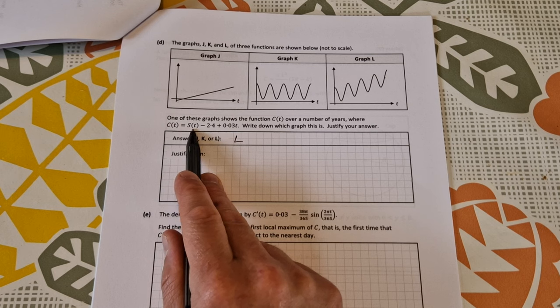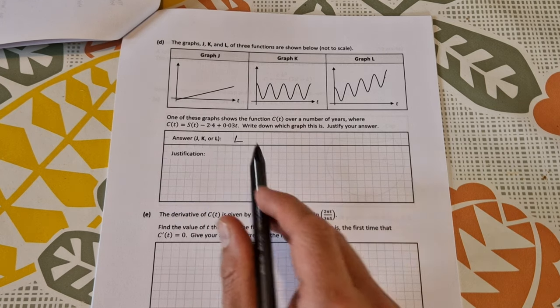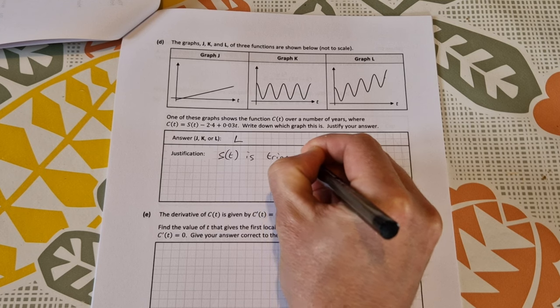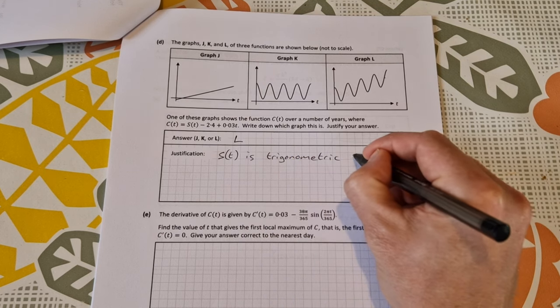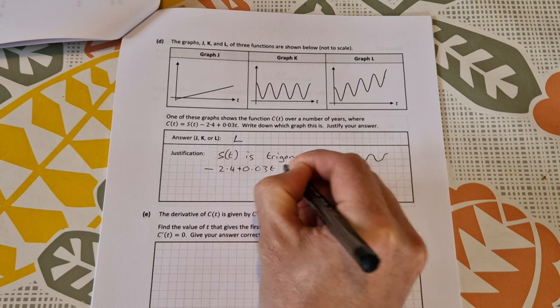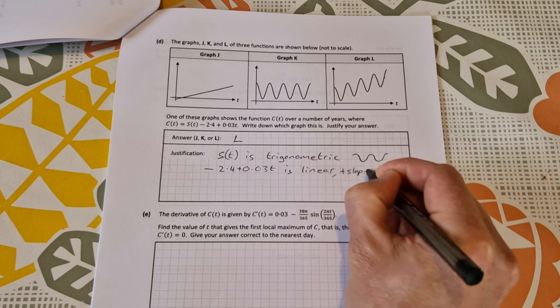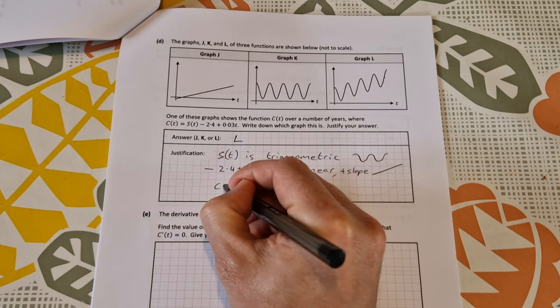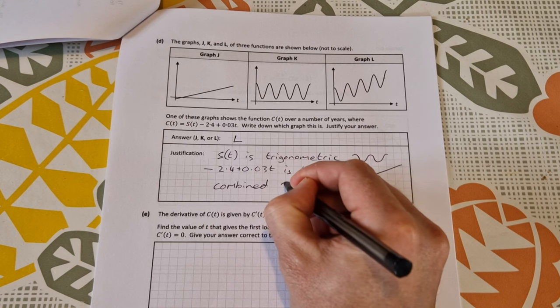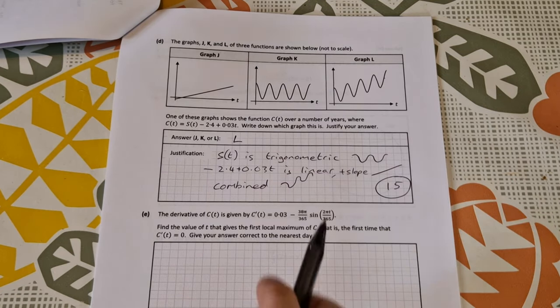The function c(t) is a trigonometric function. s(t) is the trigonometric part from before, and this bit is a linear function with a positive slope. So for the justification: s(t) is trigonometric, so it looks like this. Minus 2.4 plus 0.03t is linear with a positive slope, m is 0.03. If we combine the two of them, we have a trigonometric that's increasing, so that is graph l. That's worth 15 marks. You really have to be clear on your justification and give the three parts of it to get your full 15 marks.